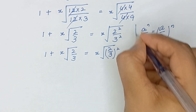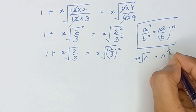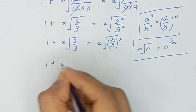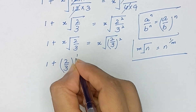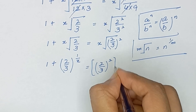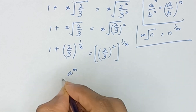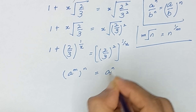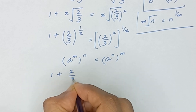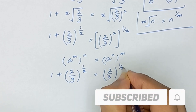We know that m-root of n is equal to n to the power 1 divided by m. So it will become 1 plus (2/3) to the power 1 divided by x is equal to (2/3) squared, and its power 1 divided by x. Here we will use the exponential rule: a to the power m, whole power n, is equal to a to the power n, whole power m. So it will become 1 plus (2/3) to the power (1/x) is equal to (2/3) to the power (1/x), squared.